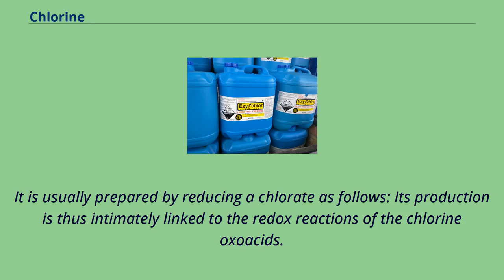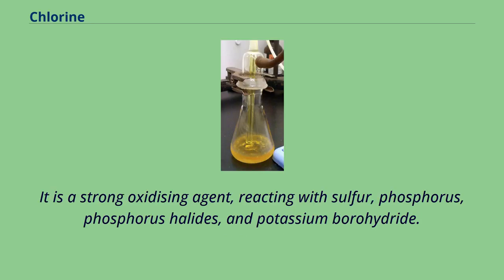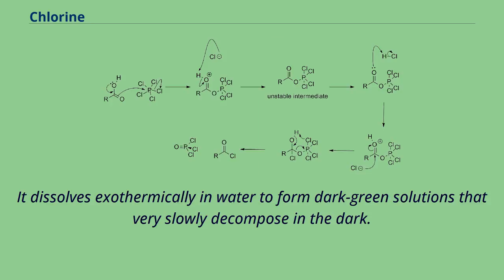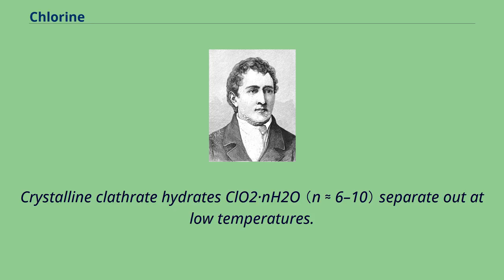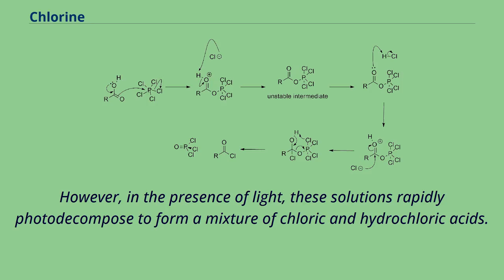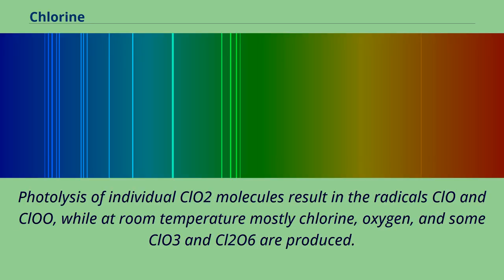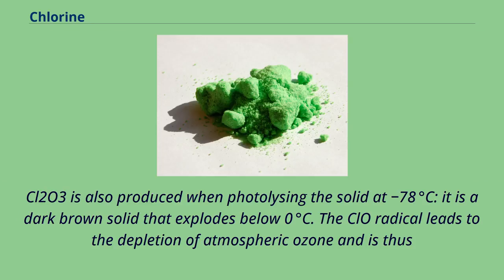Chlorine dioxide is a strong oxidizing agent, reacting with sulfur, phosphorus, phosphorus halides, and potassium borohydride. It dissolves exothermically in water to form dark green solutions that very slowly decompose in the dark. Crystalline clathrate hydrates ClO₂·nH₂O separate out at low temperatures. However, in the presence of light, these solutions rapidly photodecompose to form a mixture of chloric and hydrochloric acids. Photolysis of individual ClO₂ molecules results in the radicals ClO and Cl, while at room temperature mostly chlorine, oxygen, and some ClO₃ and Cl₂O₆ are produced. Cl₂O₃ is also produced when photolysing the solid at −78°C; it is a dark brown solid that explodes below 0°C. The chloro radical leads to the depletion of atmospheric ozone and is thus environmentally important.